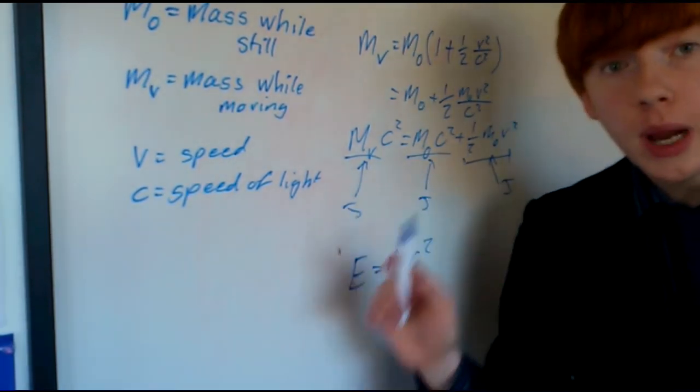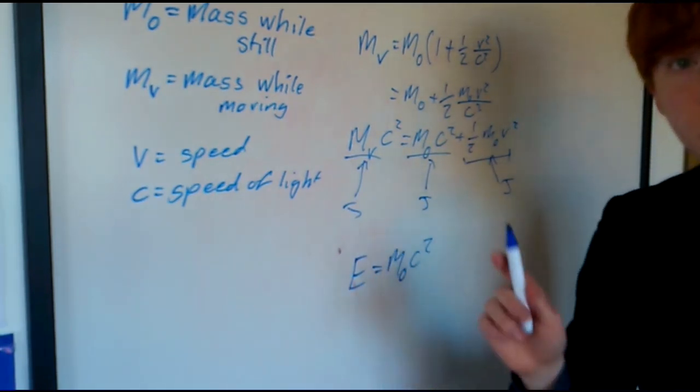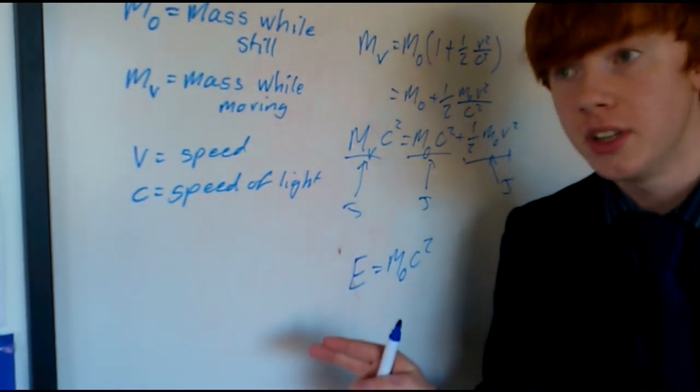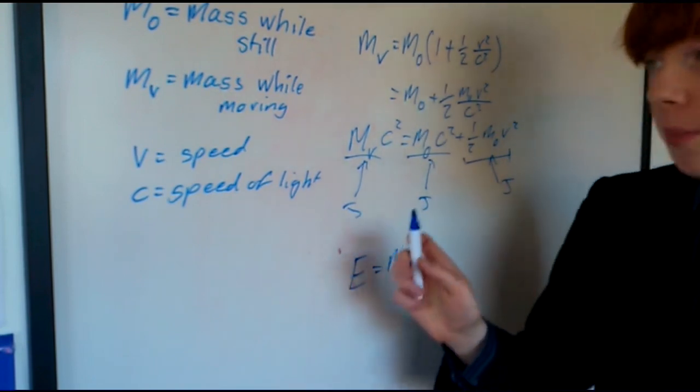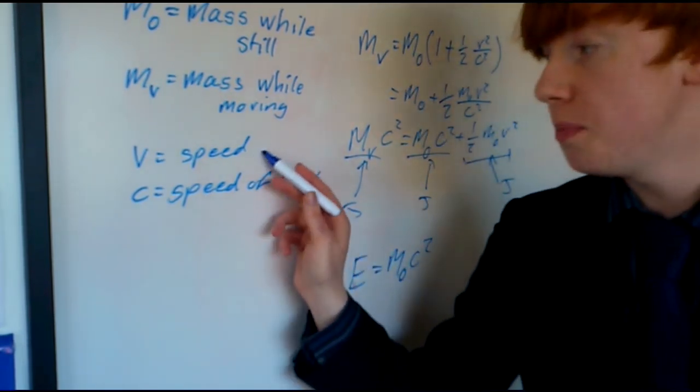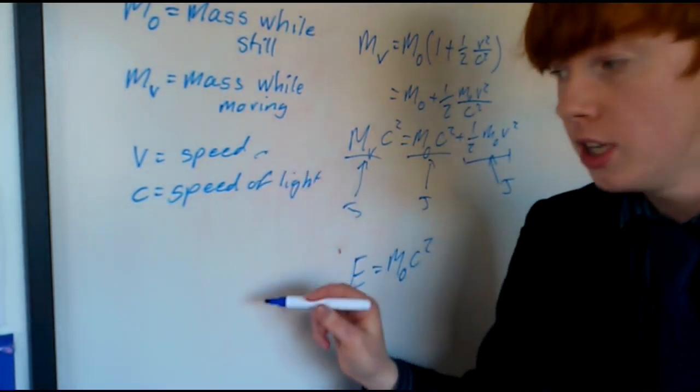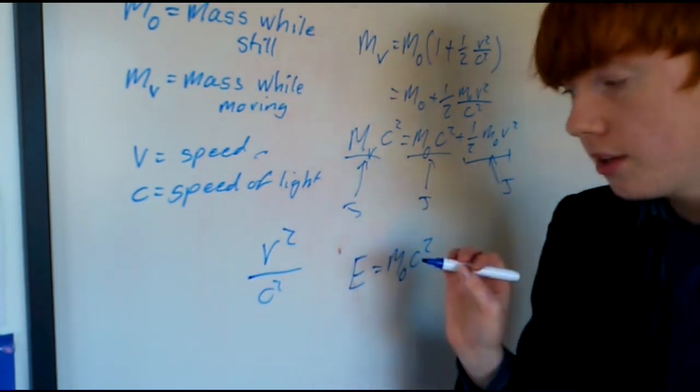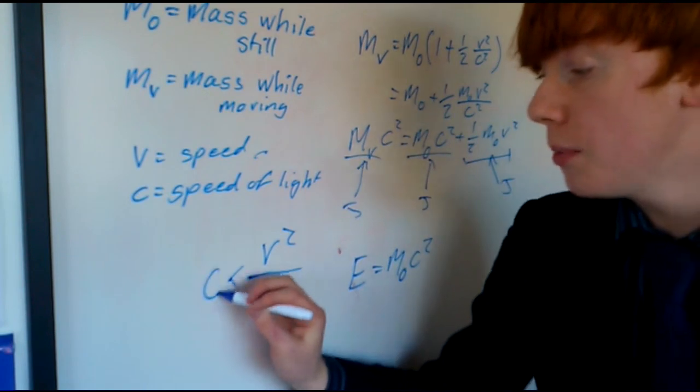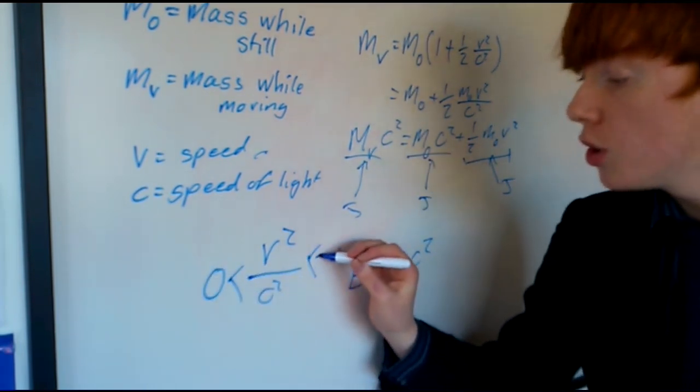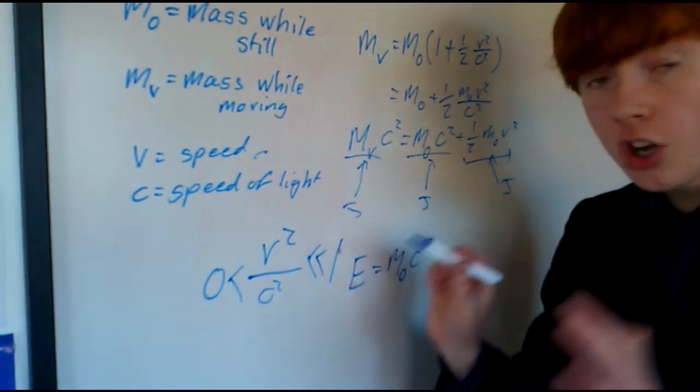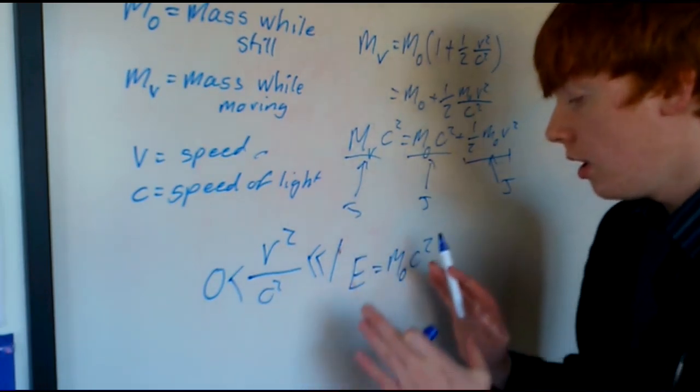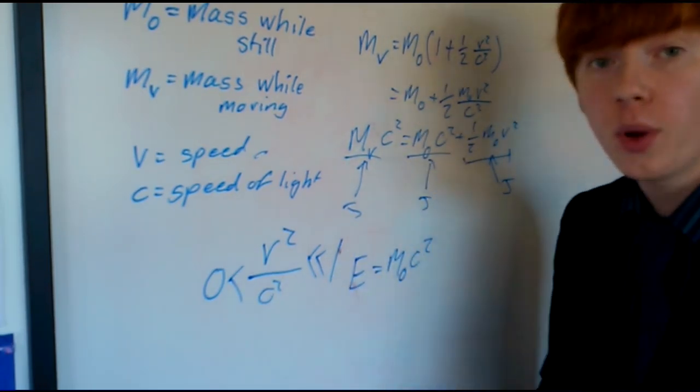Now remember this though, the way we came to this answer is we used two approximations, and these approximations both apply only when your speed is very small. Meaning that your speed squared divided by the speed of light squared, despite it being more than zero, it must be much, much less than one. And only when that is true does E actually equal mc squared.